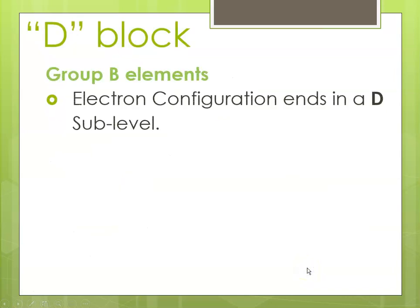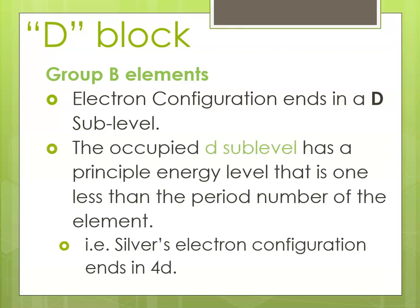The D block is where the so-called transition elements are, and the electron configuration ends in a D sub-level. The occupied D sub-level always has a principal energy level that is 1 less than whatever your row number is, because remember the D's fill in after the S sub-level.